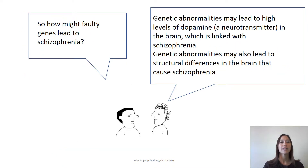So how might faulty genes lead to schizophrenia? Genetic abnormalities may lead to high levels of dopamine, a neurotransmitter in the brain, which is linked with schizophrenia. Genetic abnormalities may also lead to structural differences in the brain that cause schizophrenia.